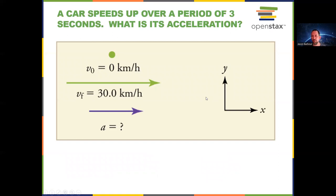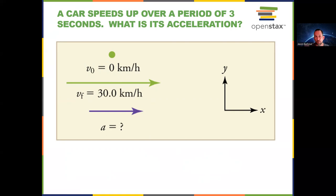Here's an example: a car speeds up over three seconds from zero to 30 meters per second. The final velocity minus the initial velocity is 30 minus zero equals 30, divided by three seconds. The units are meters per second divided by seconds, giving meters per second squared. So the acceleration is 10 meters per second squared.